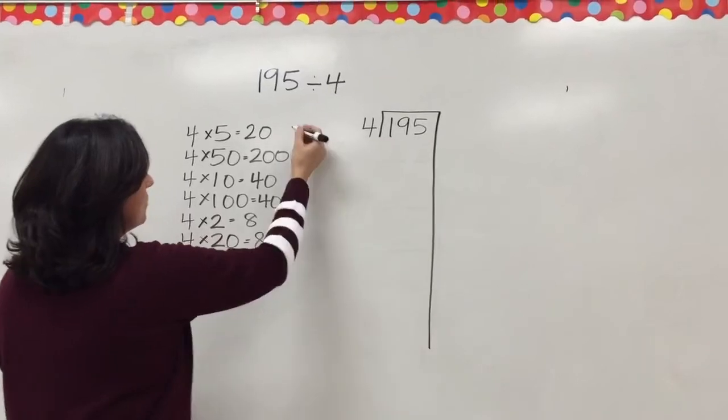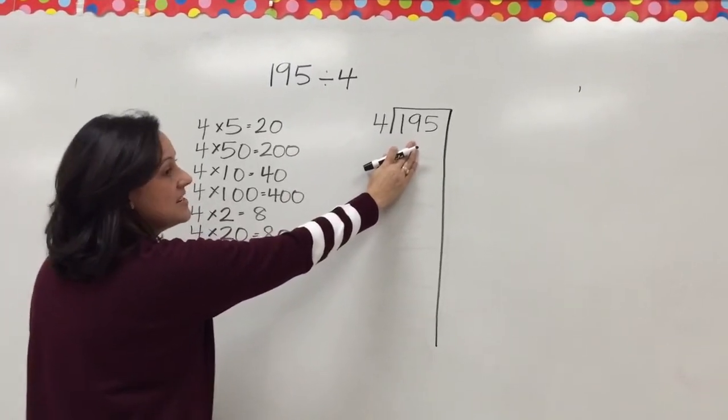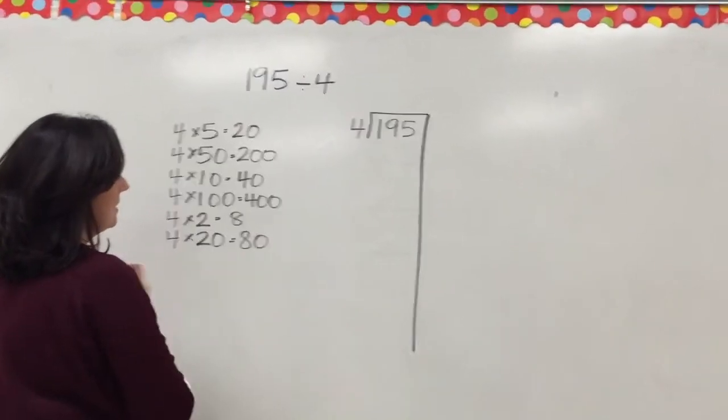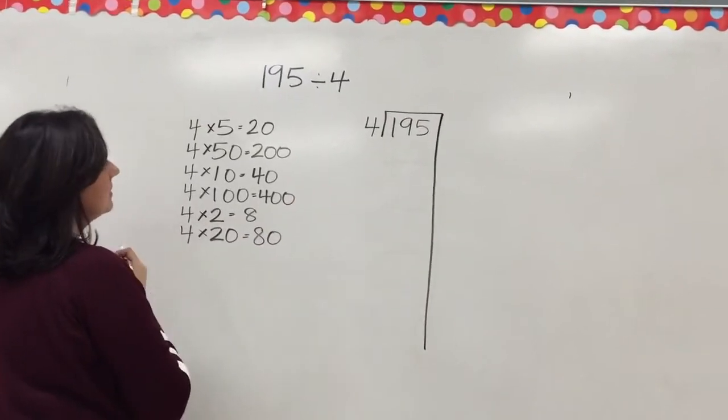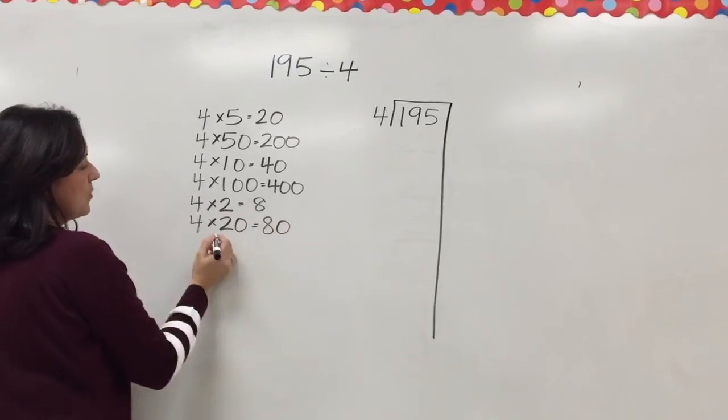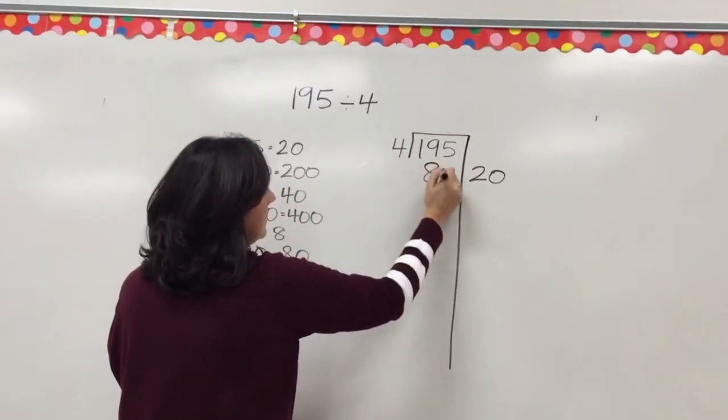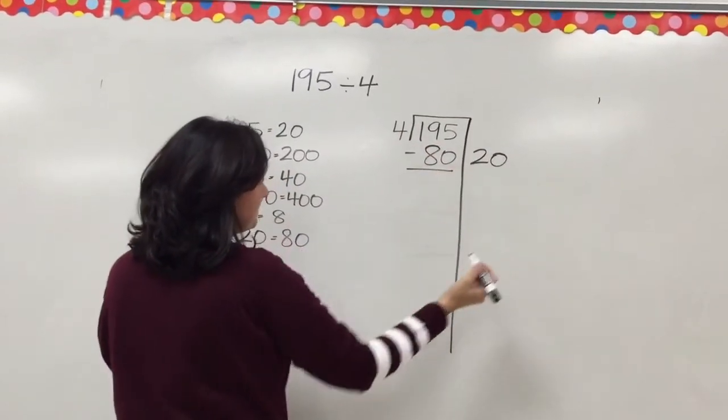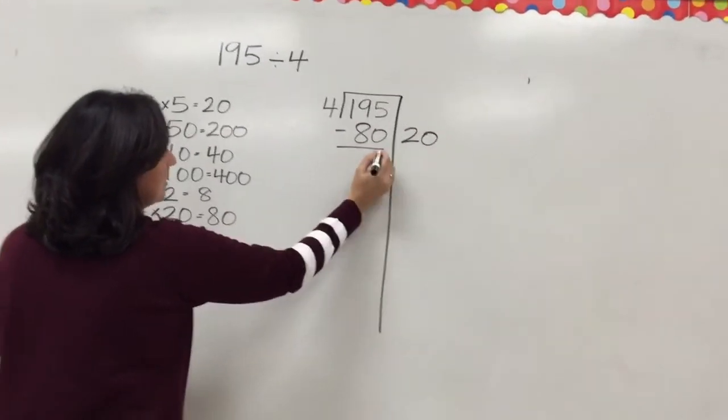Now we ask ourselves, which one of these benchmarks is going to get us close to this number, the dividend, without going over? 200 would be great, but 200 is too much. So it looks like we're going to have to go with 20 so that we can get 80. We did 20 times 4 is 80. Now I'm going to subtract.